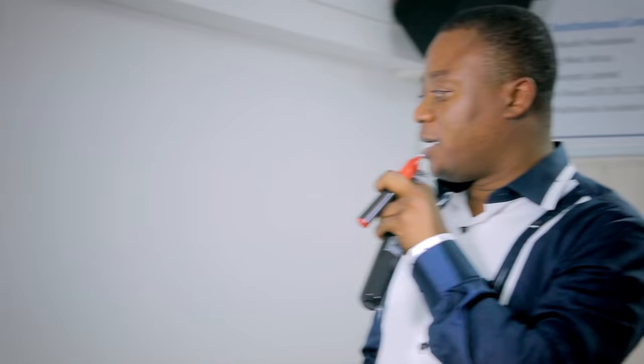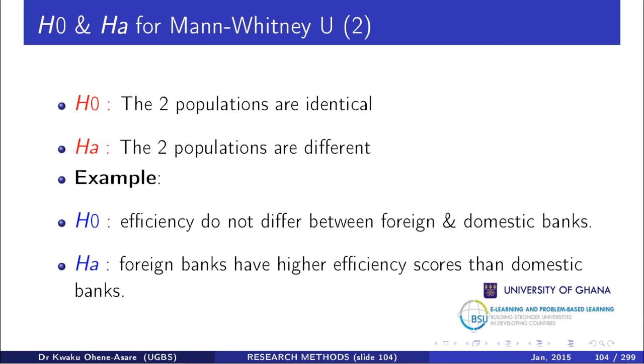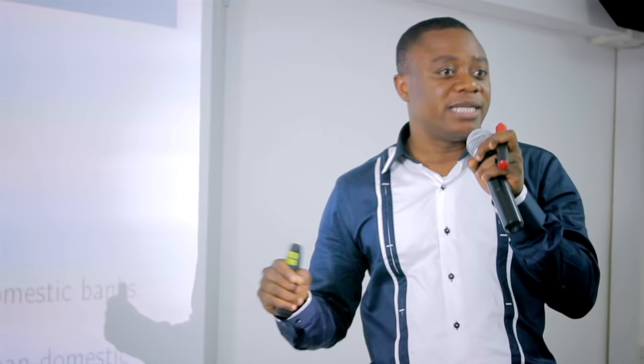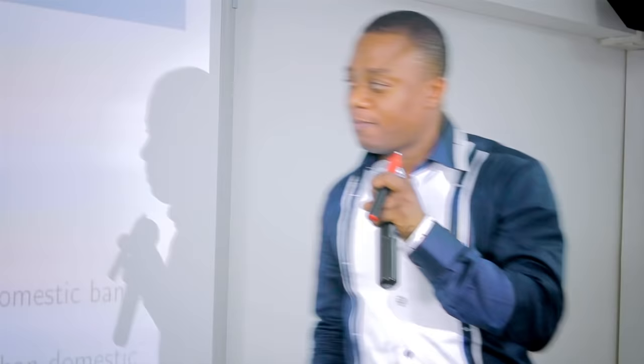One potential example is: foreign banks have higher efficiency than domestic banks. Even though the wording may seem like plain English, mathematically the null will use 'equal to' and the alternative will use 'not equal to' or 'greater than' as appropriate.